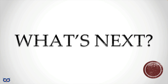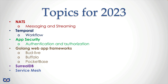So then, what should we do next? At the beginning of this year, this is the plan I laid out in terms of topics I'd like to cover: NATs first, then Temporal — a workflow orchestration framework — then application security and authentication/authorization, and then a couple of Go web application frameworks, because we haven't really delved into how to build applications with frameworks. And then potentially Surreal database and service mesh, which are really big topics on their own.